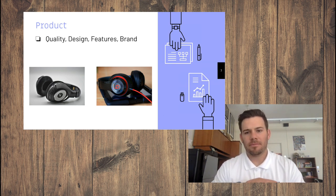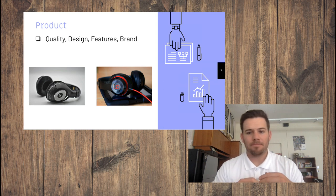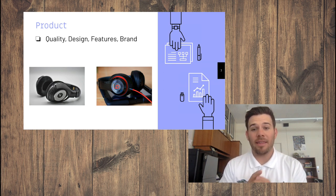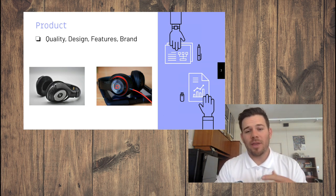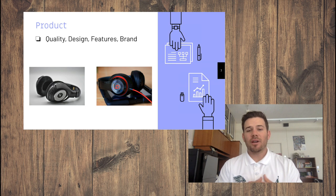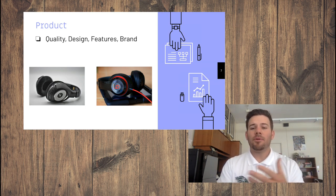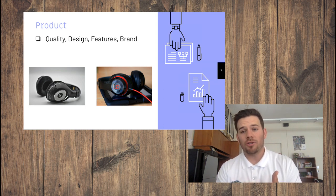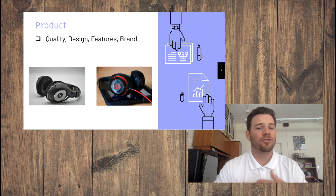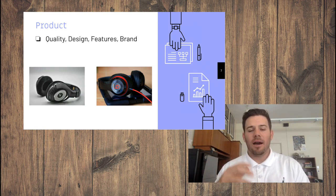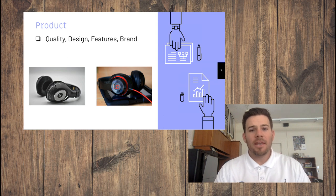Our first focus is product — quality, design, features, and brand. We have two headphones: a generic one on the left and Beats by Dr. Dre on the right. When you look at quality, design, and features, you'd probably say the Beats are better — that's a great example of branding. When marketing our product, we might aim for the same look at a lower quality, maybe $100 instead of $300.